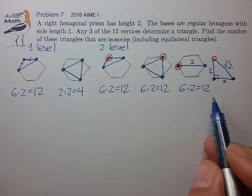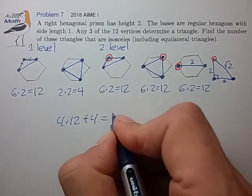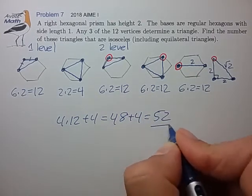And I think that exhausts all the possible triangles you can conceive of, so let's count them up. 4 times 12 plus 4, 52. Final answer.